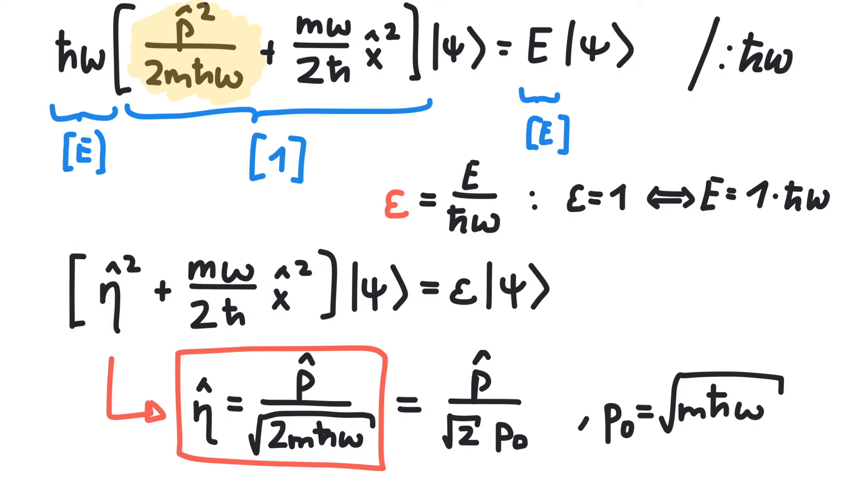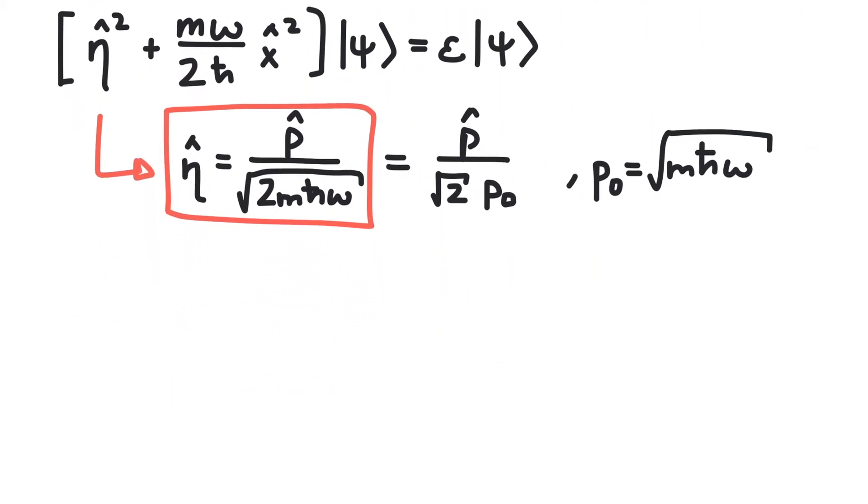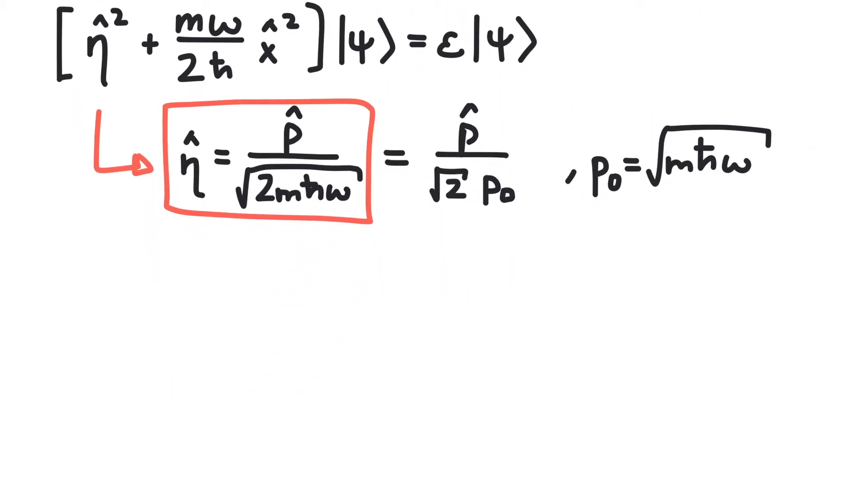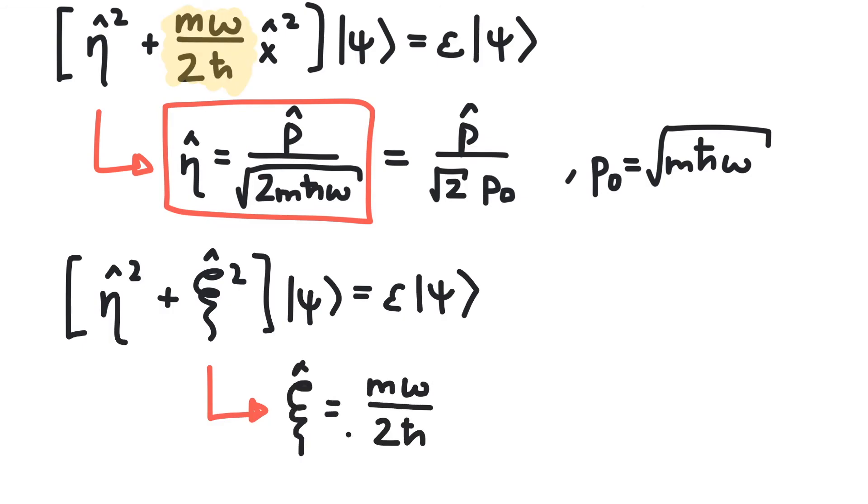Now in the same manner, let's switch to a dimensionless position operator, xi. Again we want to write xi squared instead of prefactors and x squared. So xi is given by this square root times x. And again we could write this in a shorter way using x sub 0.